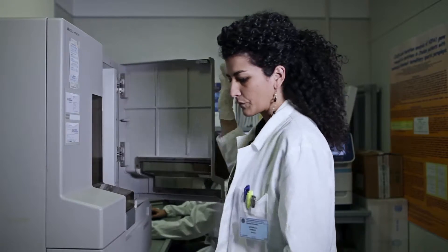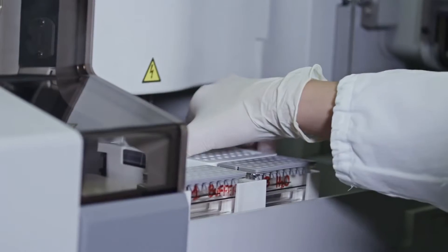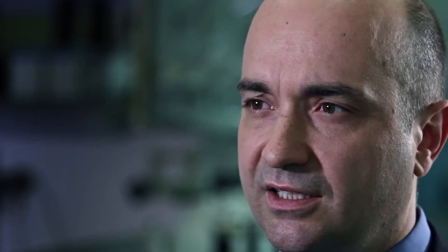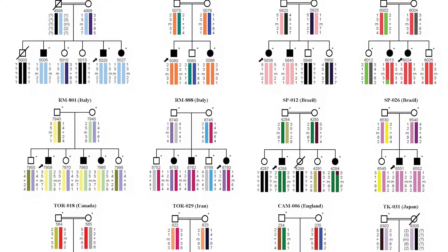We investigated 28 unrelated families with autosomal recessive axonal Charcot-Marie-Tooth type 2 disease, defined by clinical, electrophysiological, and pathological evaluations. These pedigrees were collected over more than 15 years of work, thanks to international collaborations with several research centers in Italy, Brazil, Canada, United Kingdom, and Japan.